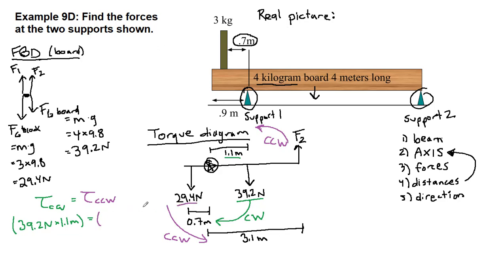And then for the counterclockwise torques, we have this force, 29.4 newtons, and the distance associated with that force is 0.7 meters. And then we just have to add a second separate term, the force from support 2, and the distance associated with that is the 3.1 meters.